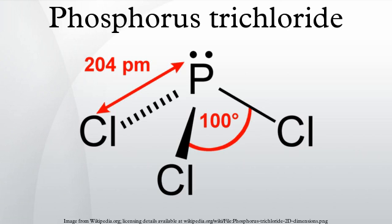Uses: PCl3 is important indirectly as a precursor to PCl5, POCl3, and PSCl3, which are used in many applications including herbicides, insecticides, plasticizers, oil additives, and flame retardants. For example, oxidation of PCl3 gives POCl3, which is used for the manufacture of triphenyl phosphate and tricresyl phosphate, which find application as flame retardants and plasticizers for PVC. They are also used to make insecticides such as diazinon.